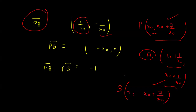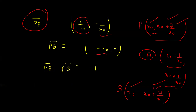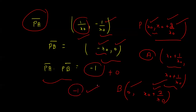Point B = (0, x₀ + 2/x₀). Vector PB = B − P, so the x-component is 0 − x₀ = −x₀ and the y-component is (x₀ + 2/x₀) − (x₀ + 2/x₀) = 0. So PB = (−x₀, 0). The dot product PA · PB = (1/x₀)(−x₀) + (−1/x₀)(0) = −1 + 0 = −1.